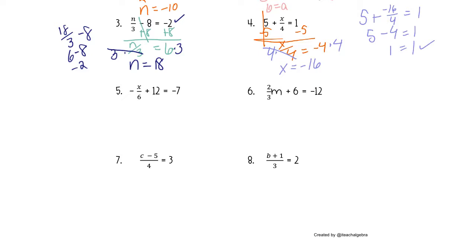All right. 5 and 6 are a lot the same, so let's pause here and try those on your own, and we'll walk through them together. We want to get the x term alone, so we'll subtract 12 from each side starting off. We've got negative x over 6. The 12s cancel, and that equals negative 19.